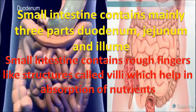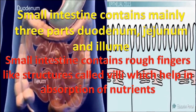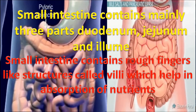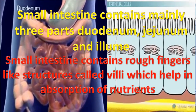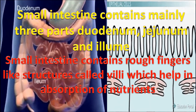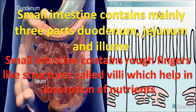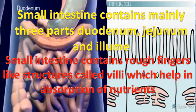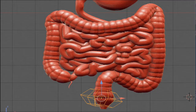The small intestine contains mainly three parts: duodenum, jejunum, and ileum. The small intestine also contains rough finger-like structures called villi, which help in absorption.